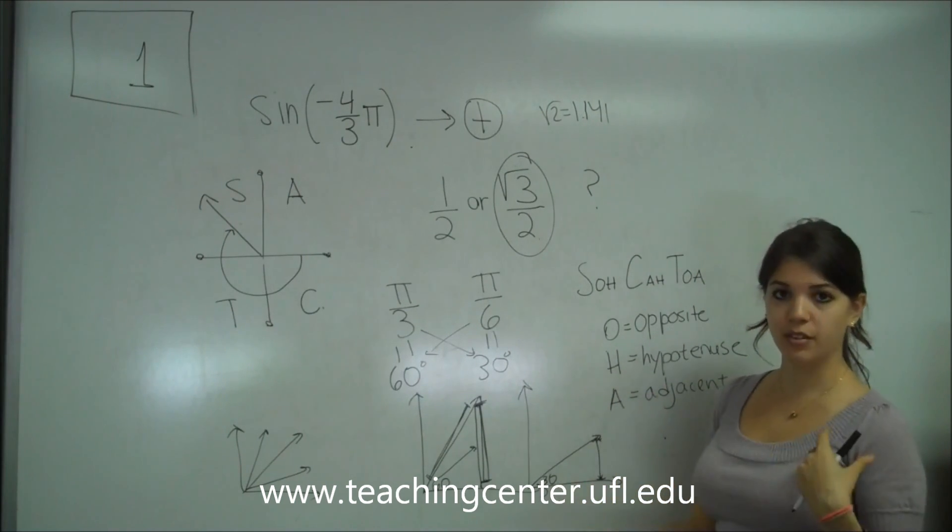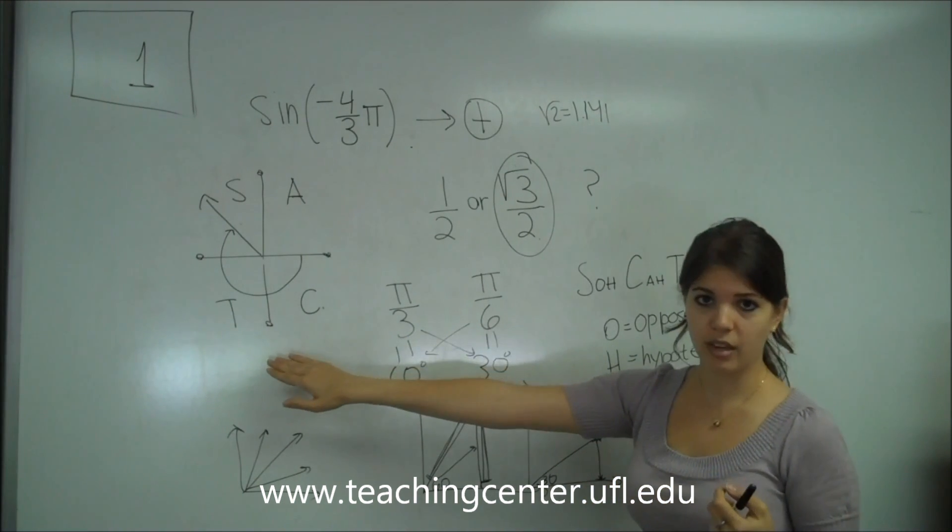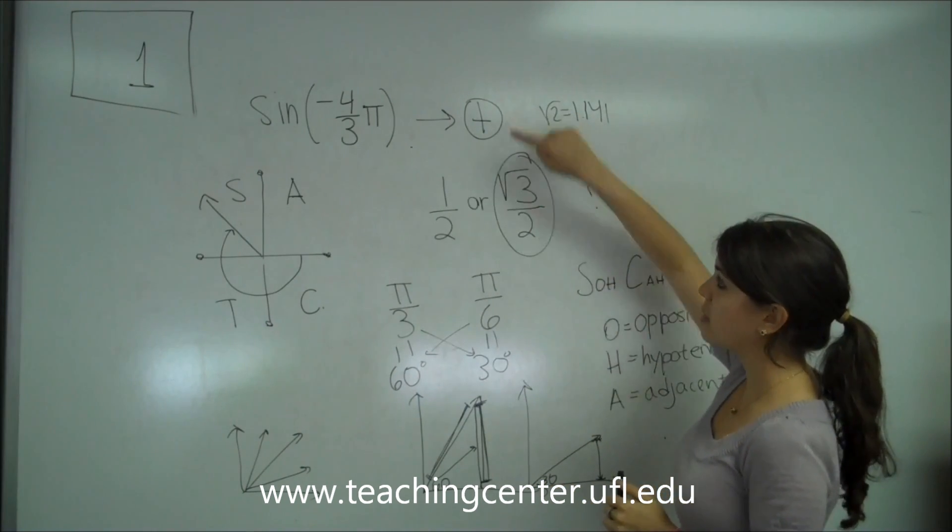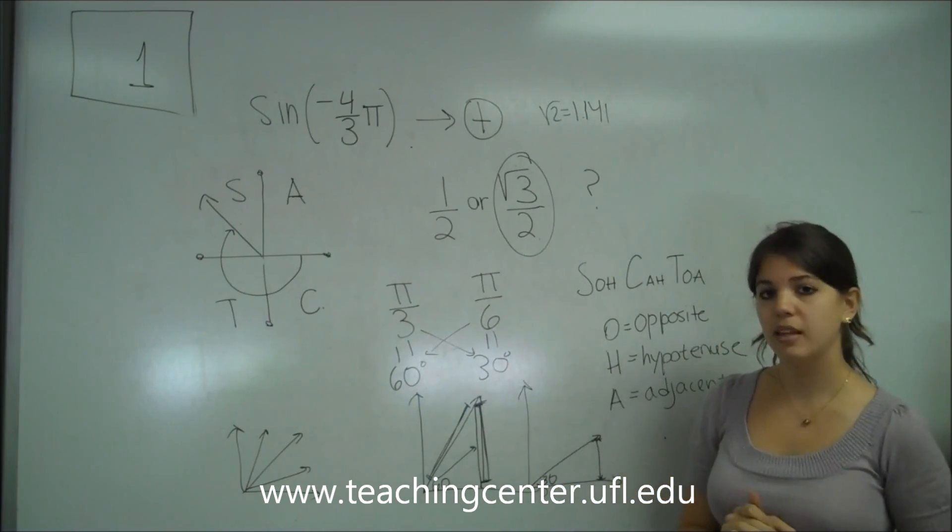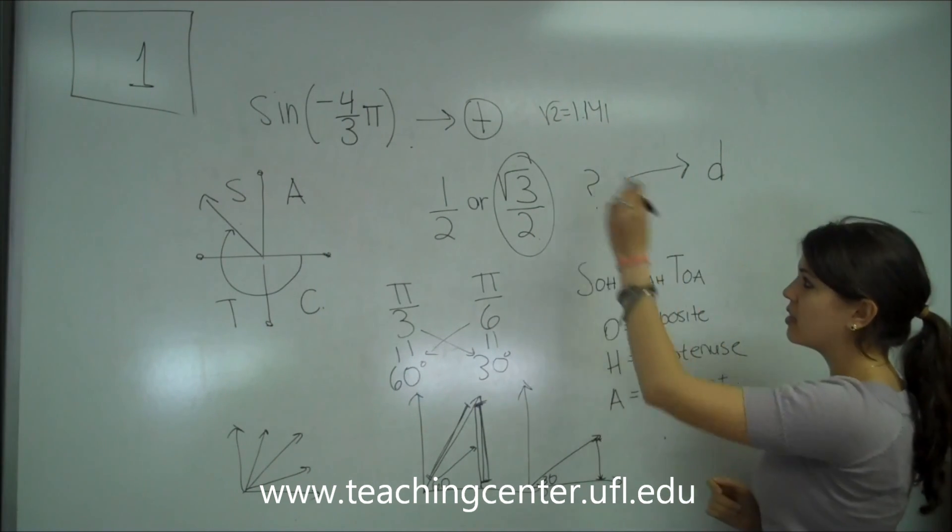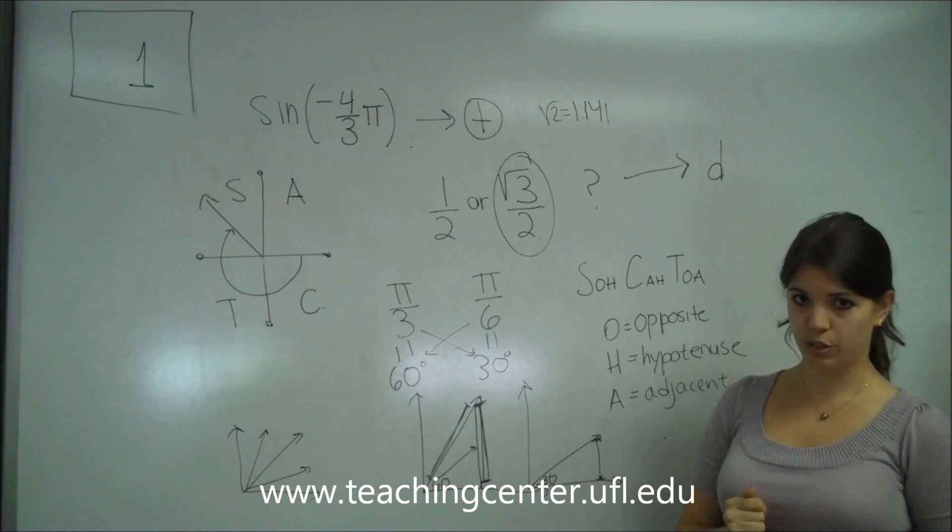So, the answer for that has got to be this guy. And then we determine, is it positive or negative, using the first thing I taught you, and we had already determined it's positive. So, it's going to be answer D, which is positive square root of 3 over 2.